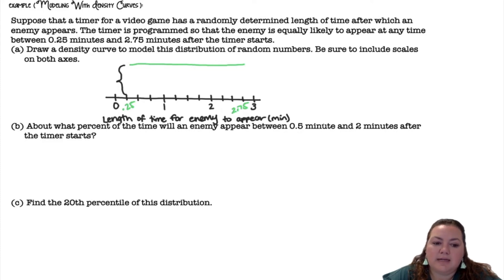I need to figure out what this height is. If it's equally likely then I'm making a rectangular shape. So area equals base times height for a rectangle. The area under that curve is 1. Base is 2.5, I did 2.75 minus 0.25 to get 2.5 times the height. I'm going to divide by 2.5 on both sides. I get 0.4 for the height.